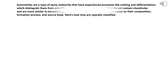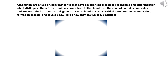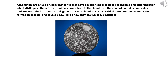Achondrites are a type of stony meteorite that have experienced processes like melting and differentiation, which distinguish them from primitive chondrites. Unlike chondrites, they do not contain chondrules and are more similar to terrestrial igneous rocks. Achondrites are classified based on their composition, formation process and source body.